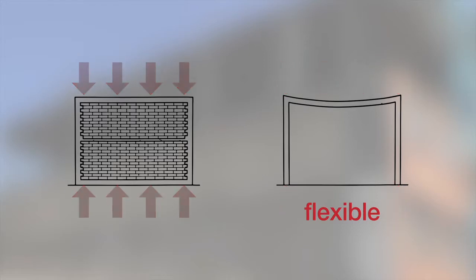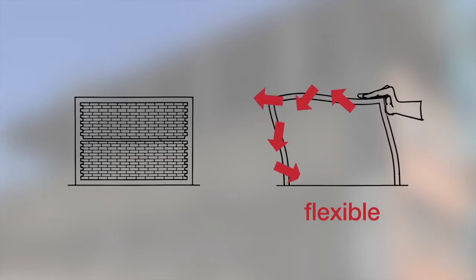In confined masonry, however, the walls carry both vertical and horizontal loads. These walls bound together by the confining elements form a more rigid construction system.